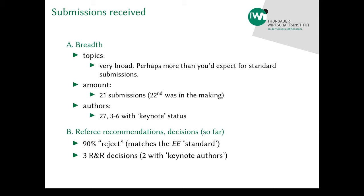In terms of referee recommendations and decisions: we had 90% rejects, both in terms of recommendations by authors and in terms of decisions. That matches exactly the experimental economics standard. We have three revise and resubmit decisions, and two of them have keynote authors on board — so in that sense there might be a seniority bias, but the numbers are very low and hard to judge from that.